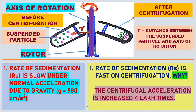This is the experimental setup of the ultracentrifuge method. This is the axis of rotation. This is before centrifugation. This is called the rotor, about which it is rotated. We know the rotor, the axis of rotation, and the before centrifugation setup. After centrifugation, they are settled at the bottom and sedimented rapidly. Depending on the suspended particles, they are rapidly deposited depending on their molecular weight.